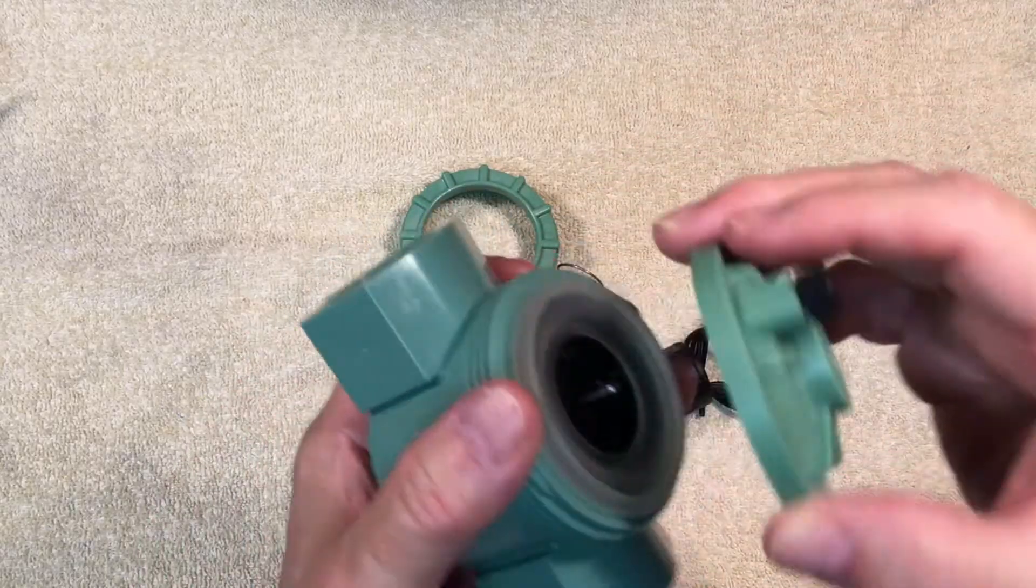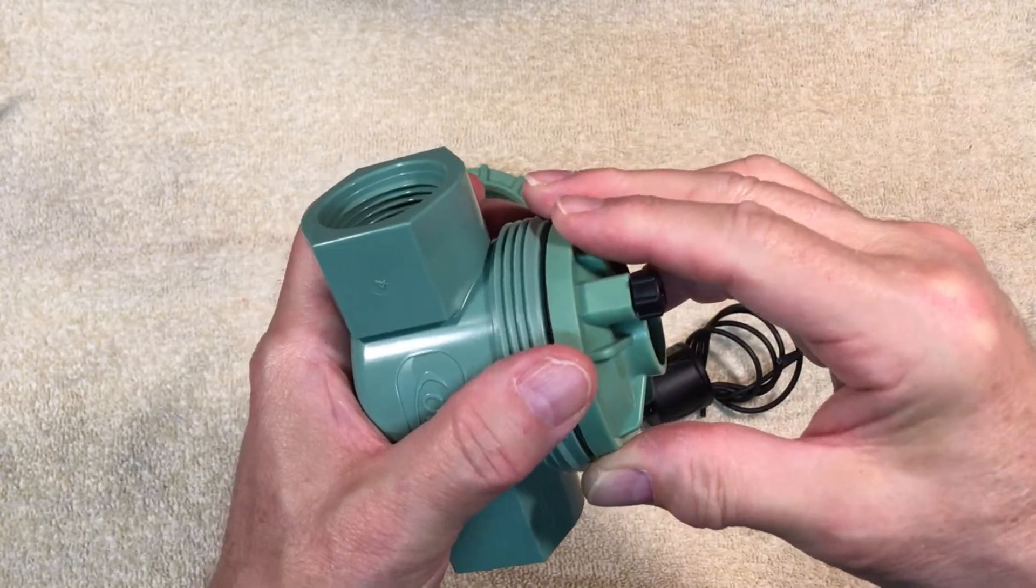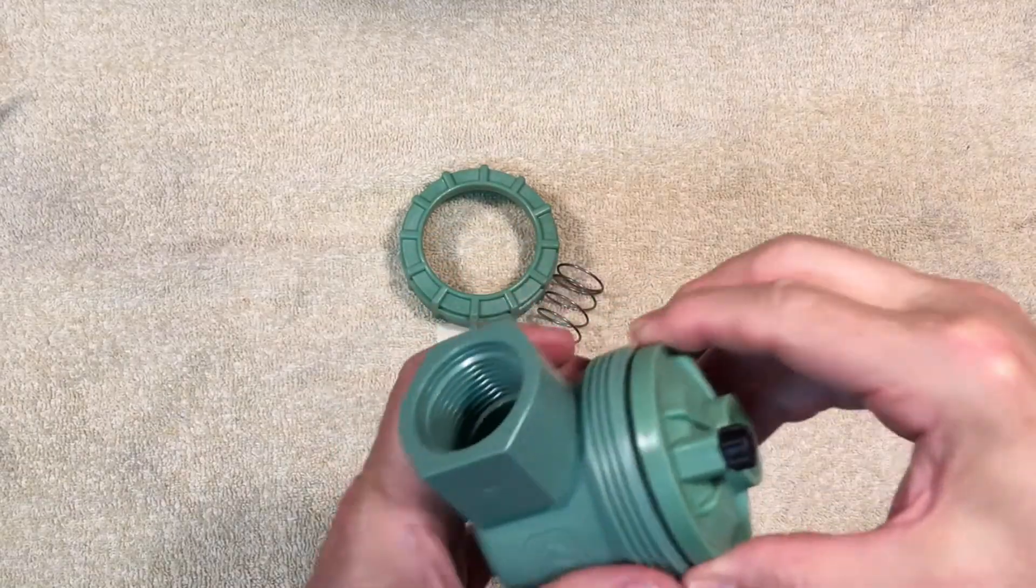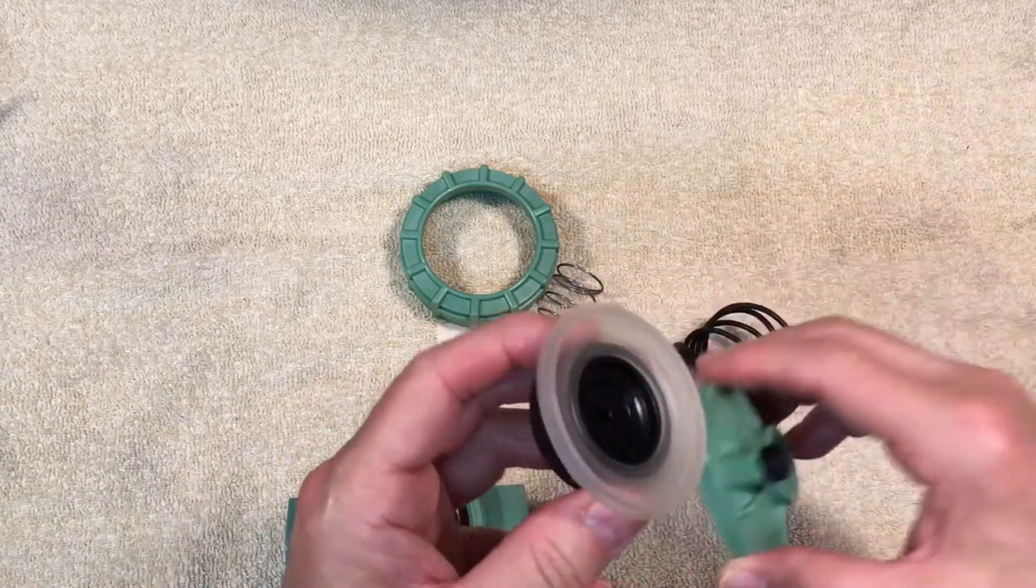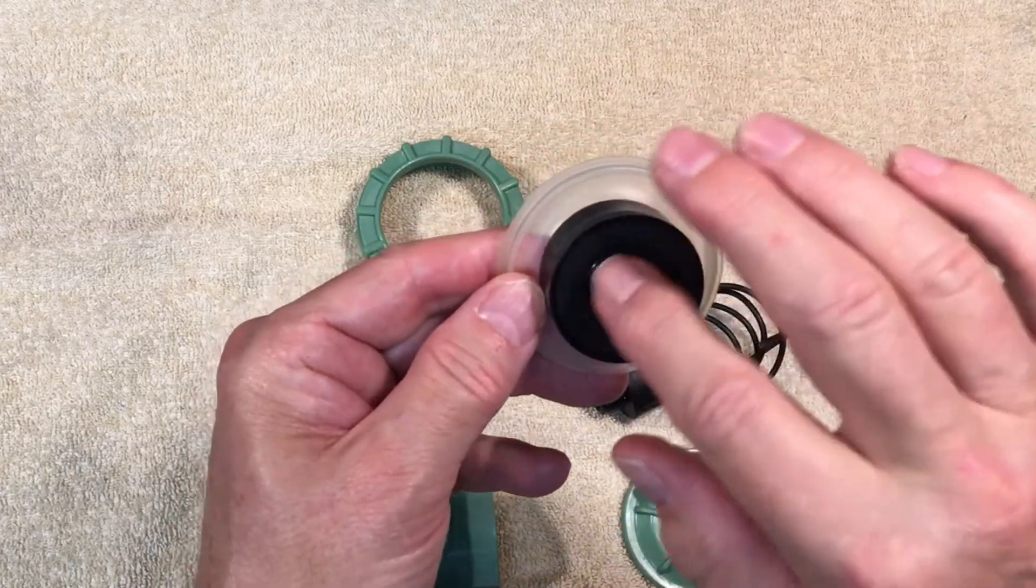That water in the top of the valve, above the diaphragm, exerts pressure from the top to keep the diaphragm pushed down or closed. The top of the diaphragm is larger than the bottom of the diaphragm, so there is more water pressure to bear on the top, keeping it down tight.